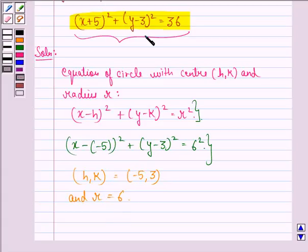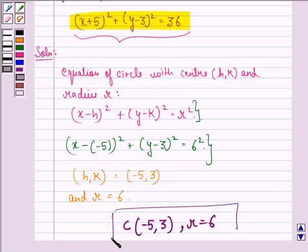For the given circle, we have center (-5,3) and radius 6. I hope you understood the question and enjoyed the session. Have a good day.